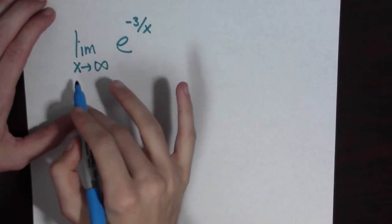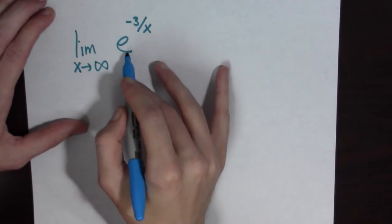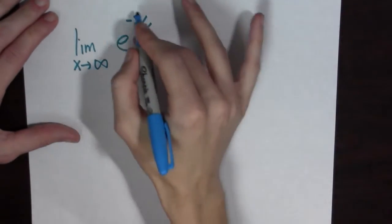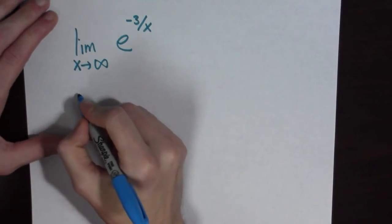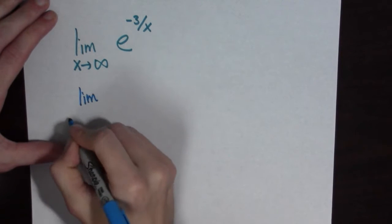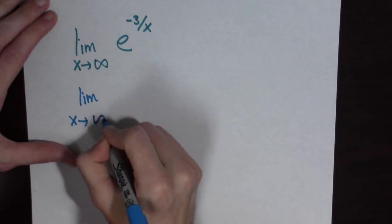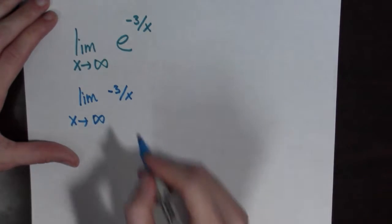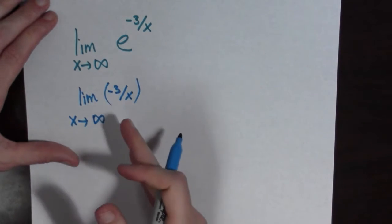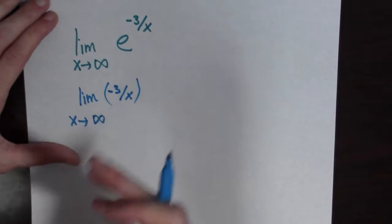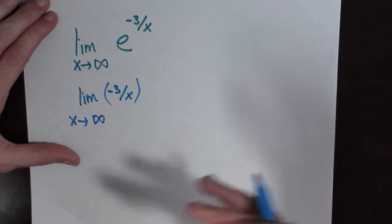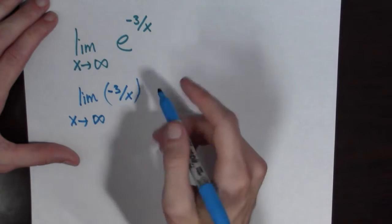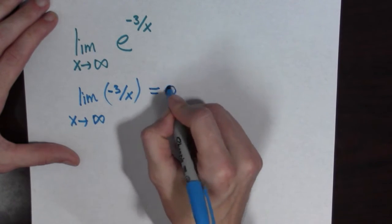Here we have the limit as x goes to infinity of e to the minus 3 over x. To do this problem, I'm going to look at the exponent by itself. So I'm going to write the limit as x goes to infinity of minus 3 over x. The numerator is negative 3, but the denominator is getting larger and larger, making this fraction smaller and smaller. So this is zero.